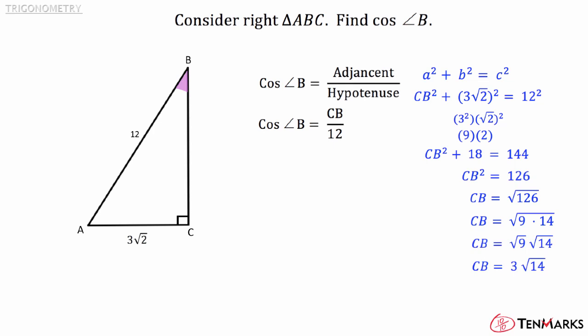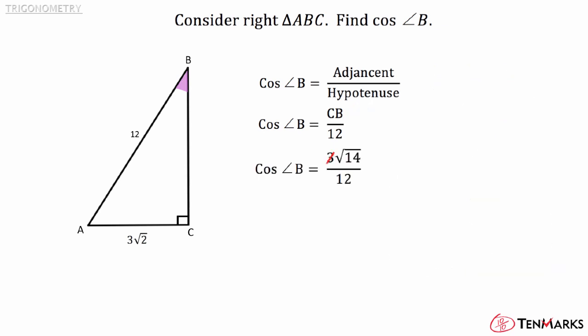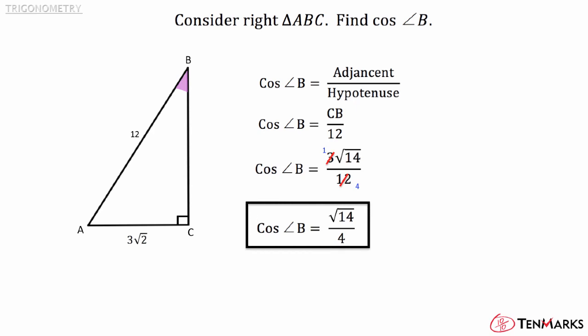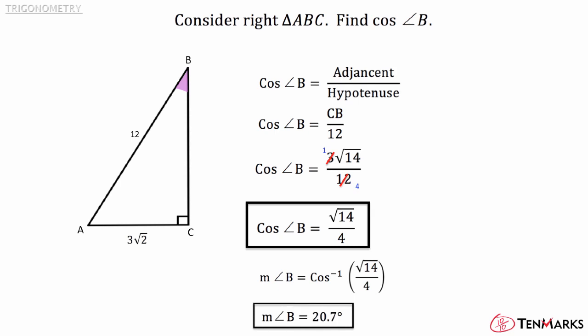Substitute 3 square root of 14 back into the equation for CB. Simplify to get the cosine of B is equal to the square root of 14 divided by 4. The answer can remain as a ratio. But if you had to, could you take it one step further and solve for the actual measure of angle B? To get the measure of angle B, you need to take the inverse cosine of the square root of 14 divided by 4. Use your inverse cosine button on the calculator to solve — the measure of angle B is 20.7 degrees.